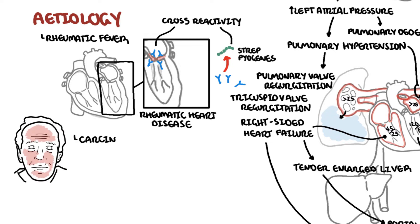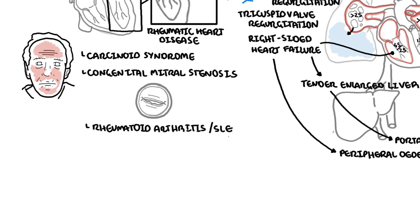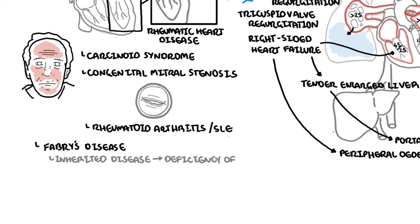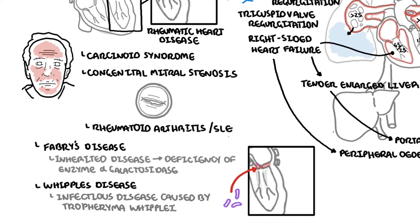Carcinoid syndrome is another cause, due to carcinoid tumors, which is normally associated with tricuspid valve disease. Congenital mitral stenosis is another cause, as well as rheumatoid arthritis and systemic lupus erythematosus. Rare causes include Fabry's disease — a rare inherited disease caused by deficiency of alpha-galactosidase A — and Whipple's disease, a rare systemic infectious disease caused by the bacterium Tropheryma whipplei, which can cause vegetation on the mitral valve leading to stenosis.